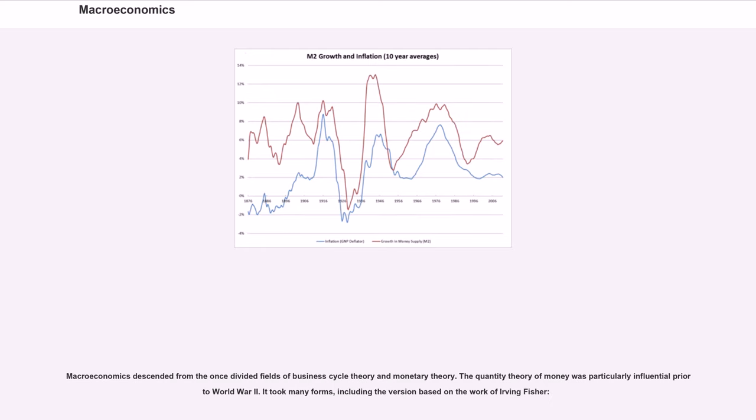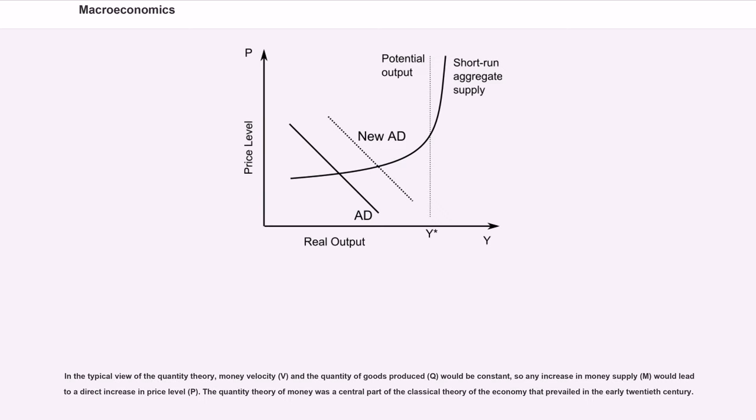Macroeconomics descended from the once divided fields of business cycle theory and monetary theory. The quantity theory of money was particularly influential prior to World War II. It took many forms, including the version based on the work of Irving Fisher. In the typical view of the quantity theory, money velocity (V) and the quantity of goods produced (Q) would be constant, so any increase in money supply (M) would lead to a direct increase in price level (P). The quantity theory of money was a central part of the classical theory of the economy that prevailed in the early 20th century.